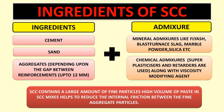What are the ingredients of SCC? In normal concrete, cement, sand, and aggregates are used. In SCC, the same base ingredients apply — cement, sand, and aggregates — but the aggregate size is chosen depending on the gap between the reinforcement. Mineral admixtures such as fly ash, blast furnace slag, marble powder, and silica are used. Chemical admixtures include superplasticizers, retarders, and viscosity modifying agents, also known as VMA.